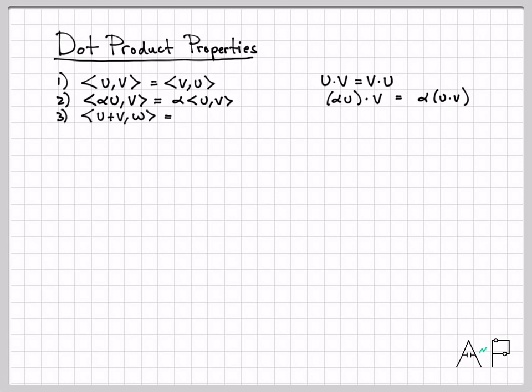Property three of the inner product was this distributive rule, which means if I add up two vectors and then take the inner product with a third, that's the same thing as inner product plus inner product. That means if I have u plus v dotted with w, that equals u dot w plus v dot w. A nice distributive rule there.